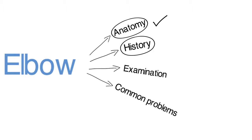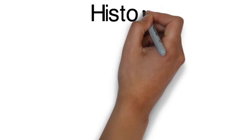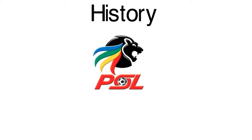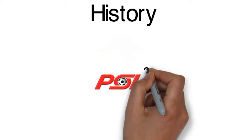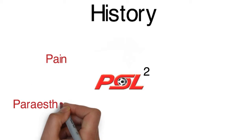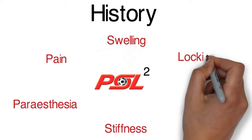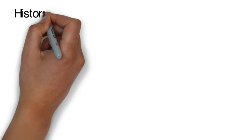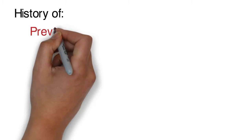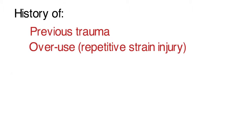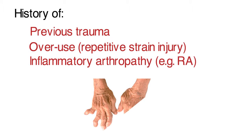Next the history. When taking a history, an easy way to remember the common complaints is to think of PSL squared. This stands for pain and paresthesia, swelling and stiffness, and locking and looks funny for deformity. There may also be a history of previous trauma, repetitive strain injury, or inflammatory arthropathies such as rheumatoid arthritis.